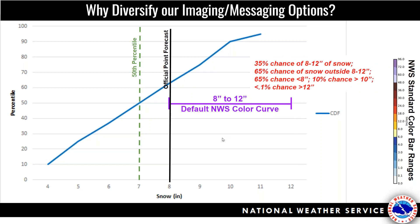Most folks haven't viewed PWPF or snow forecasts quite in this fashion, so let me break this down. For this eight-to-twelve-inch range at this particular point, there's only a 35% chance of eight to twelve inches of snow — but there's a 65% chance of snow outside of eight to twelve inches. As you can see graphically, we are messaging at the highest end of the probability spectrum to the point where there's really only about a 10% chance of getting greater than ten inches, and less than 0.1% chance of actually reaching the high end of this range that we are communicating. This should give you pause for concern.